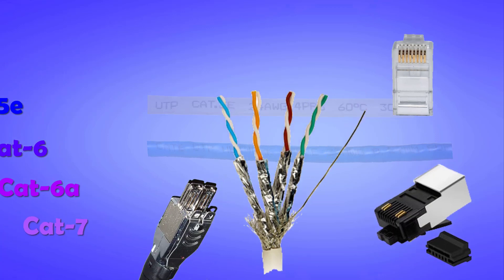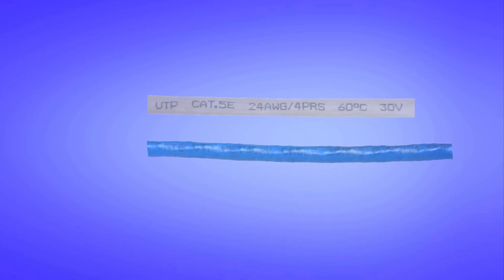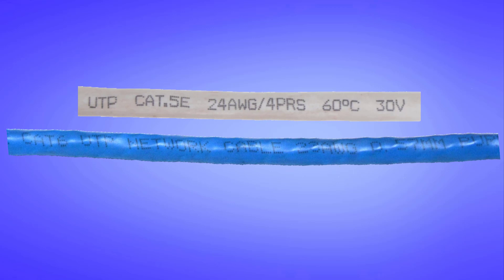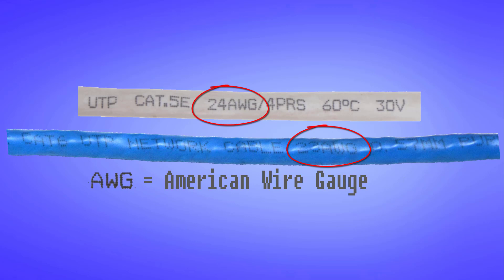So this was all about categories of Ethernet cables, but there is something more that you should know before we can end our video. And that is the gauge or thickness of the conductors inside the cable. Gauge of the conductors is perhaps the most important thing printed on any Ethernet cable. You may find something like 23 AWG or 24 AWG on the cable. The AWG here stands for American wire gauge, which is a standard for wire thickness.